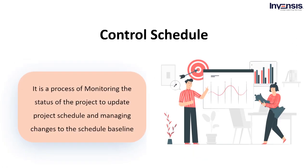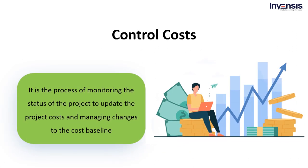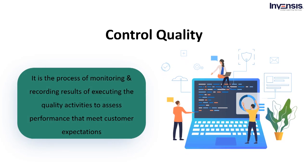Next, we have the control schedule process, which monitors the status of the project to update the project schedule. This process can be performed at any time of the project and belongs to the schedule management knowledge area. The sixth process is control costs, which monitors the project status to update the project costs and manage changes to the cost baseline. It belongs to the cost management knowledge area.